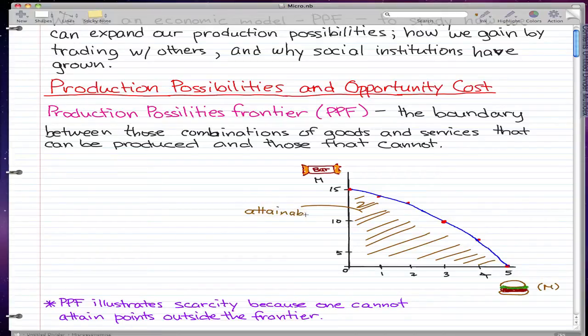Everything within the orange part is unattainable. We can't produce these amounts at this moment.